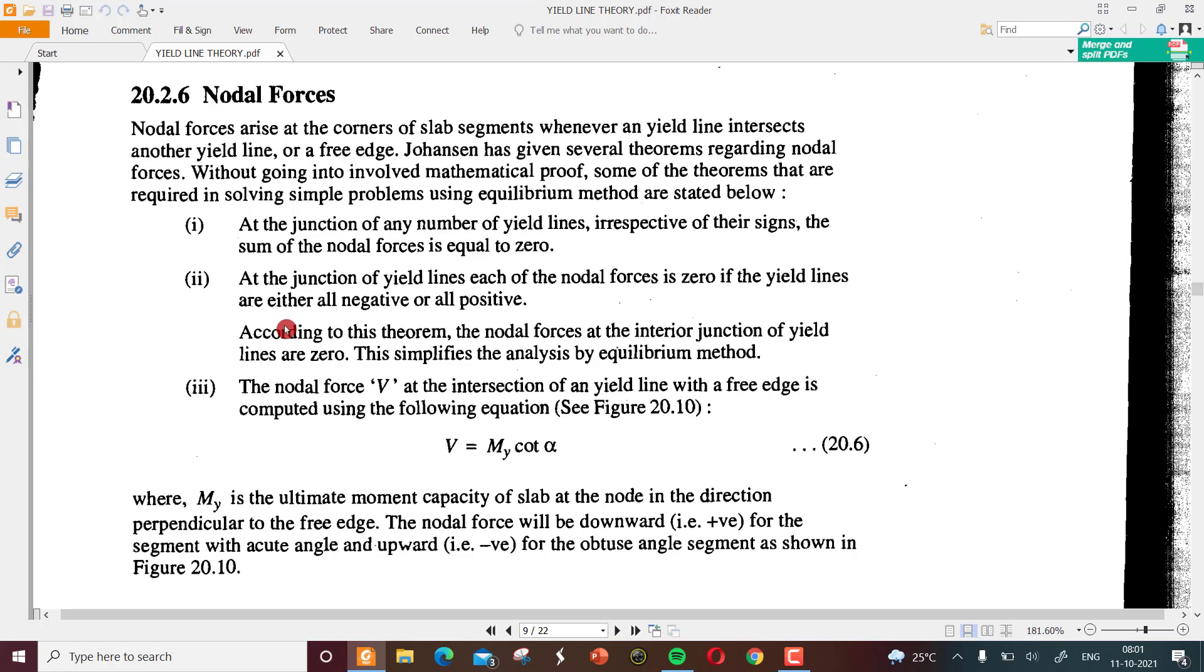Irrespective of their signs, the sum of nodal forces is equal to zero. The second one is that at the junction of yield lines, each of the nodal forces is zero if all the yield lines are either all negative or positive.